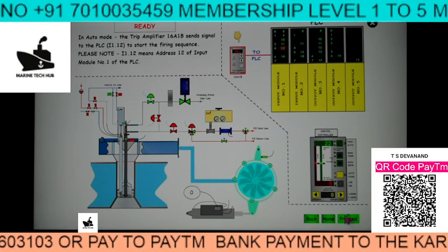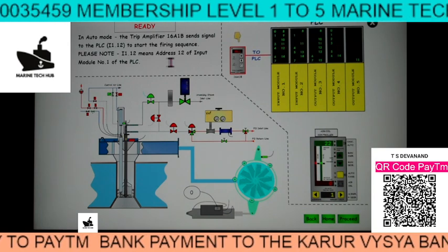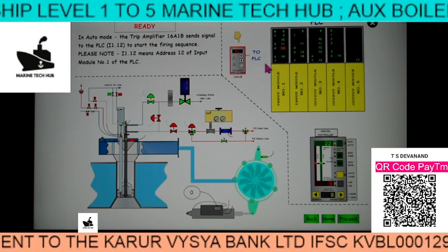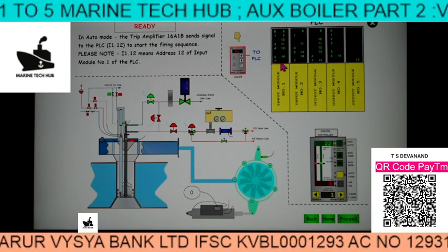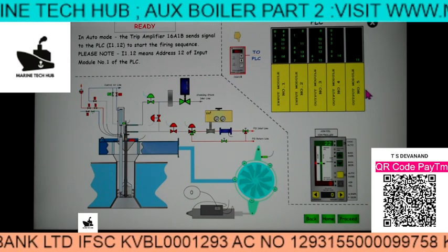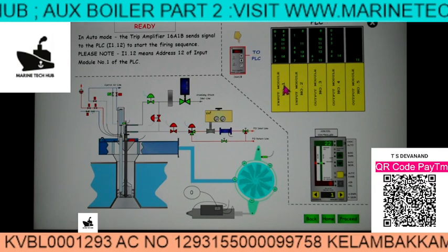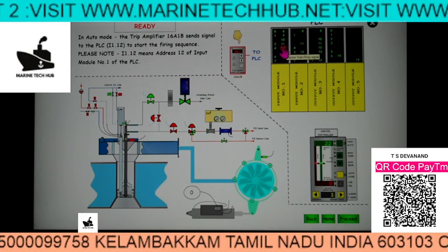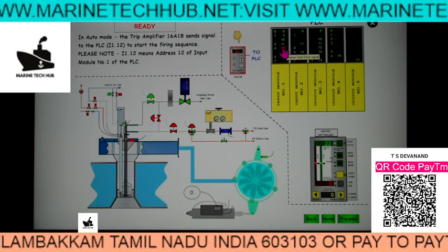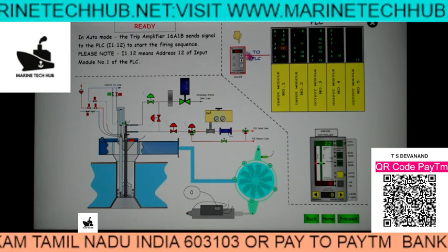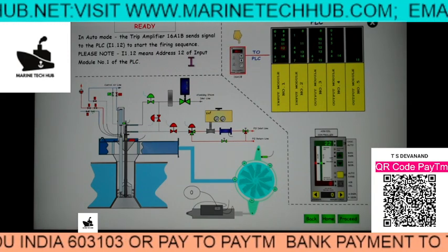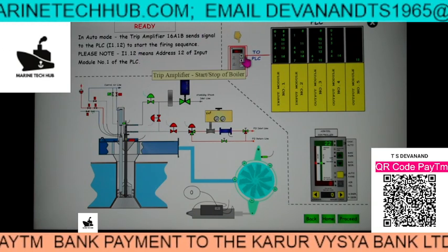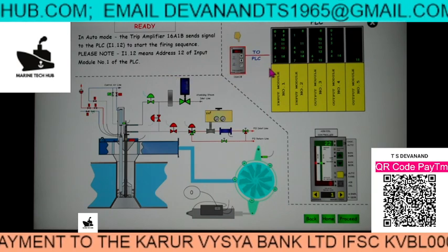To start the boiler we require the trip amplifier. This is the trip amplifier which is sending a signal to the PLC. The PLC has modules 1 to 5. Right now we are looking at module 1 and 1.12. This 1.12 is nothing but the burner start-stop signal. The first signal will go from the trip amplifier to the PLC.